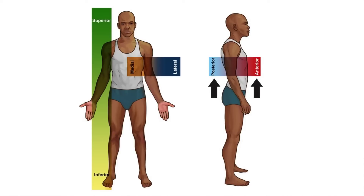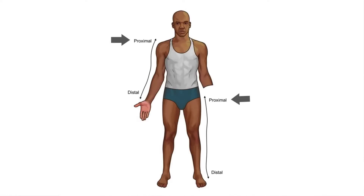Finally we have anterior and posterior. If something is anterior it goes towards the front of the body, and if something is posterior it heads towards the back. We also have some special terms that are only used in the limbs: proximal and distal. Proximal and distal relate to the limb's attachment to the body — the shoulder in the upper limb and the hip in the lower limb. If something is closer to that attachment, we describe it as proximal; if further away, we describe it as distal.